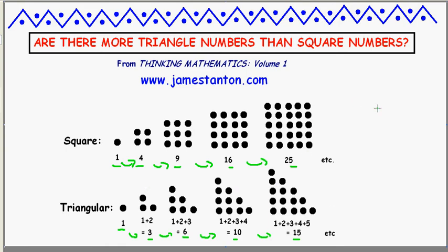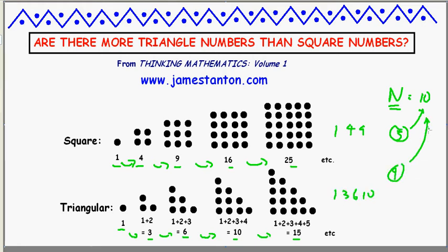Well, one way to ask that question is: choose some number n and ask how many square numbers are there up to that number n, and how many triangle numbers are there, then compare those counts. For example, if n is 10, there are square numbers 1, 4, and 9 — there are 3 square numbers less than or equal to 10. Whereas for the triangle numbers I have 1, 3, 6, and 10 — there are 4 triangle numbers less than or equal to 10.